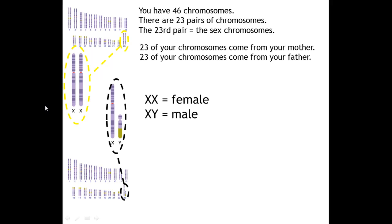So if XX is the female, then the only chromosome that the female can give across is the X, and it is the male that actually determines the sex of the offspring. With the male, he can either give across X or Y — so it is in fact the male that determines the sex of the offspring.